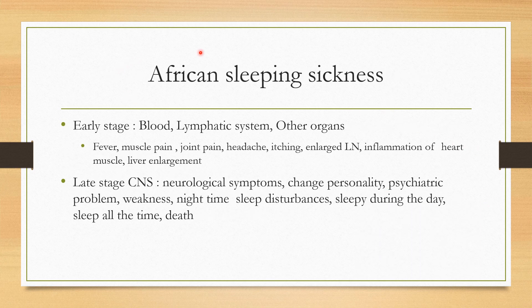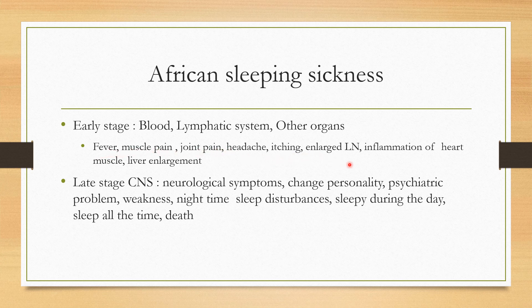African sleeping sickness has two stages: early and late. In the early stage, the parasites are present in the blood and lymphatic system, then spread to other organs like the liver and spleen. This causes fever, joint pain, muscle pain, headache, lymph node enlargement, heart muscle involvement, and liver enlargement.